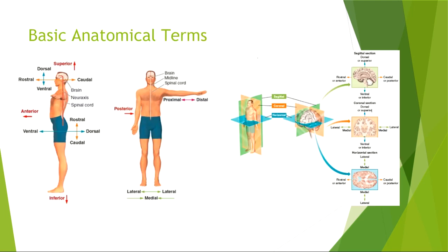The first thing we need to talk about doesn't even have anything to do with the brain or the nervous system — I just want to make sure you understand basic anatomical terms. If I ask you for directions, like how to get to the art center in the college, you'll use very specific terms to guide me: go straight, turn left, turn right. When we talk about neuroanatomy — or anatomy in general — there are very specific terms as well, and if you understand them, you'll be able to navigate the brain very easily later on.